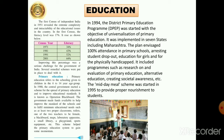In 1994, the District Primary Education Program — DPEP — was started with the objective of universalization of primary education. It was implemented in seven states including Maharashtra. The plan envisaged 100% attendance in primary schools, and arresting student dropouts — dropouts meaning students who leave school in the middle, perhaps due to family or financial problems.